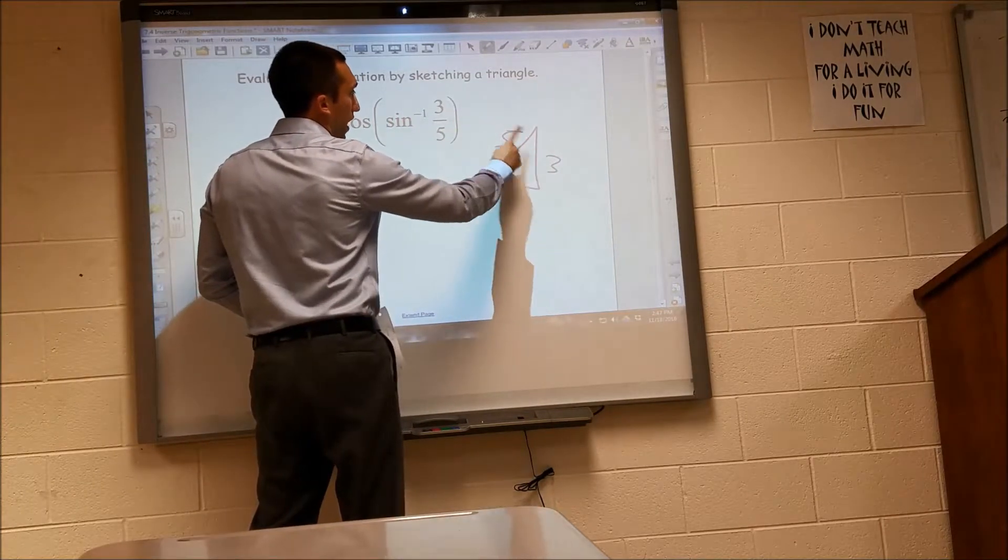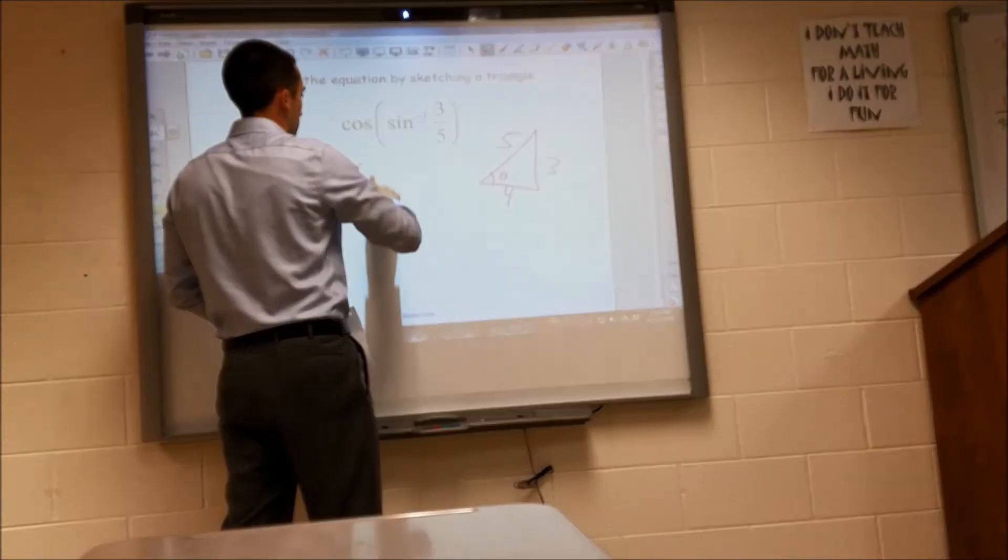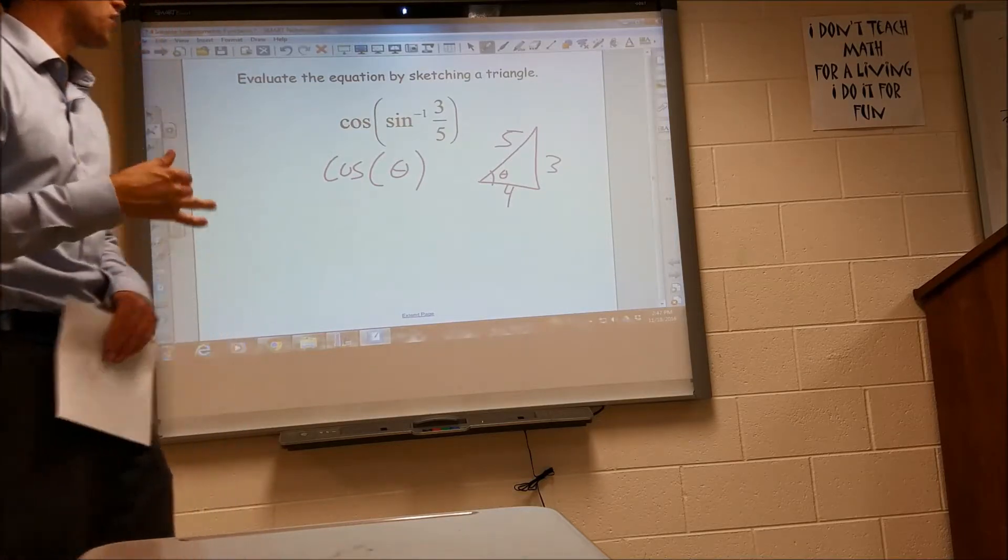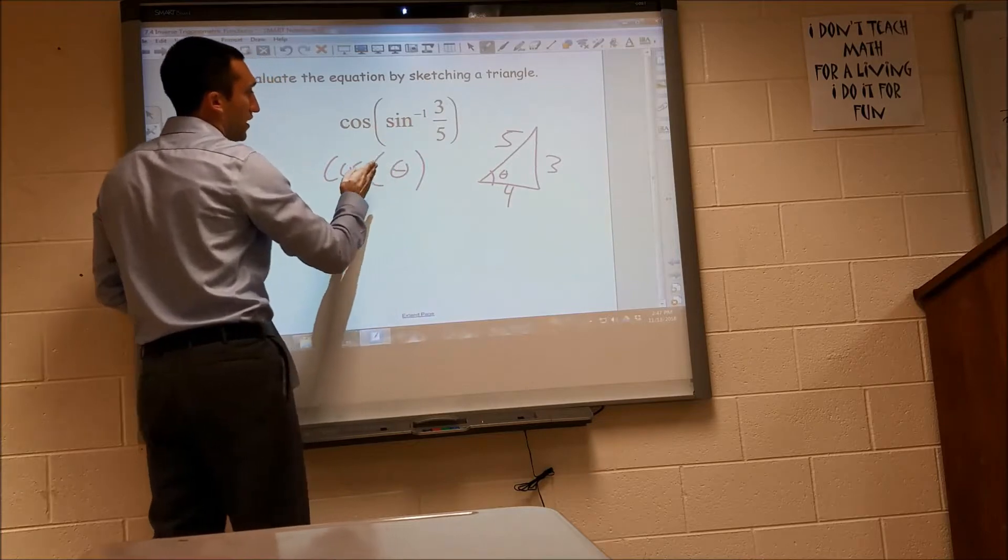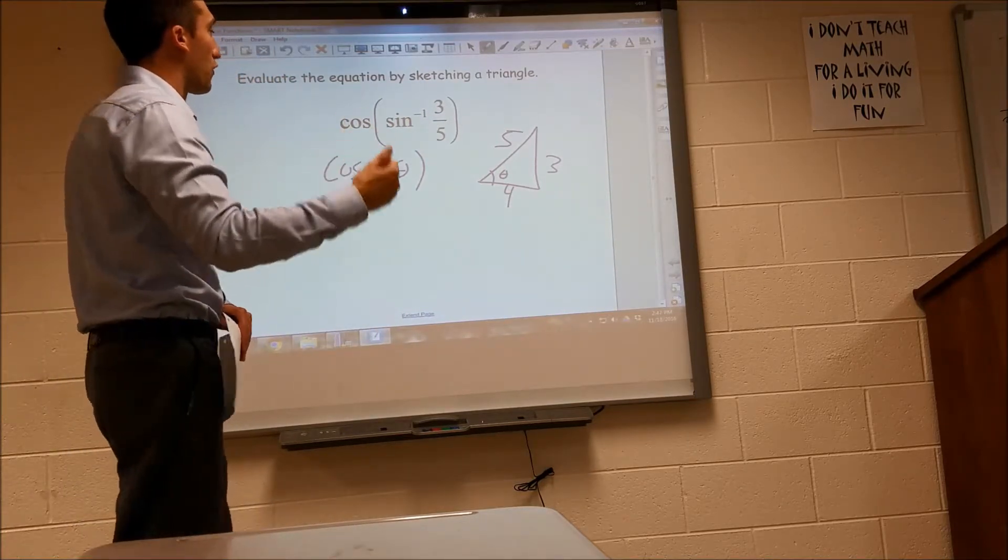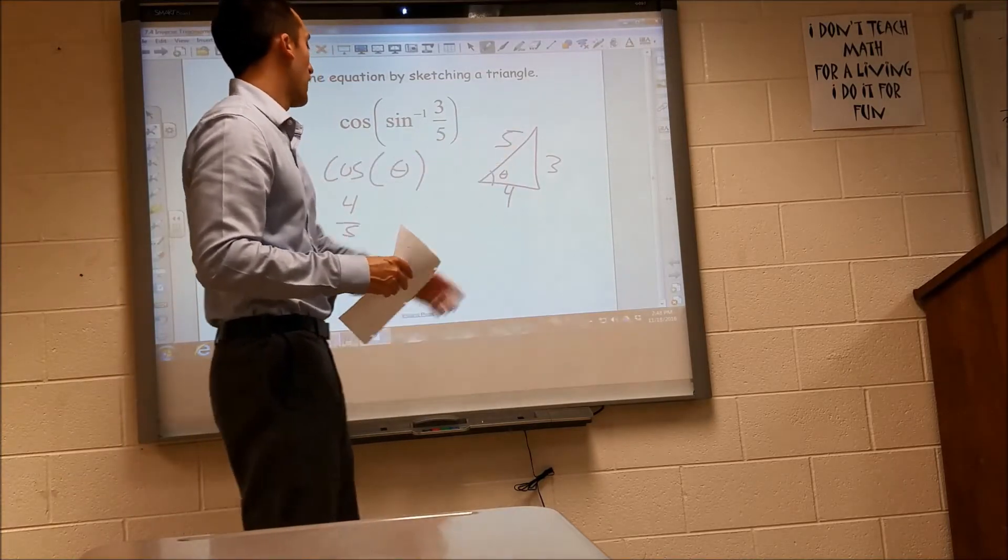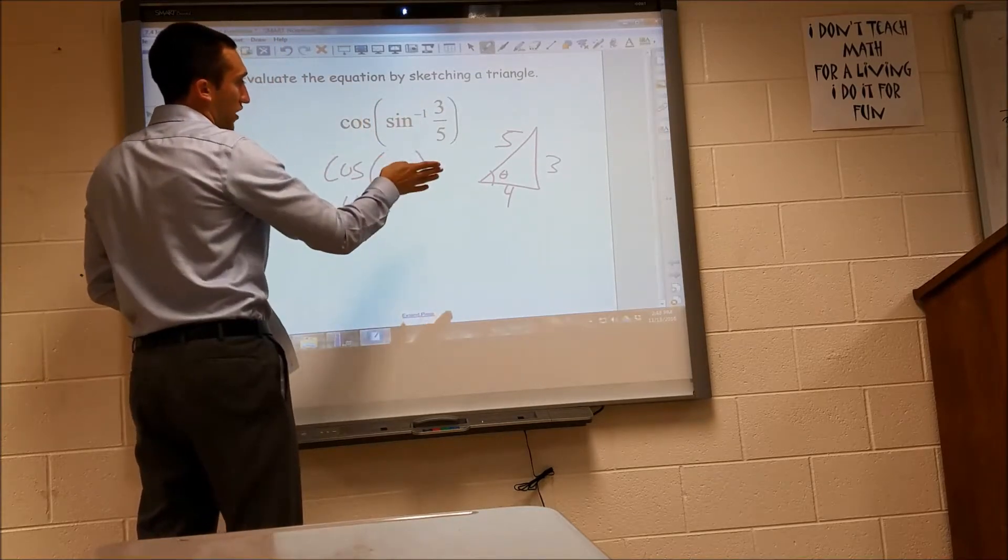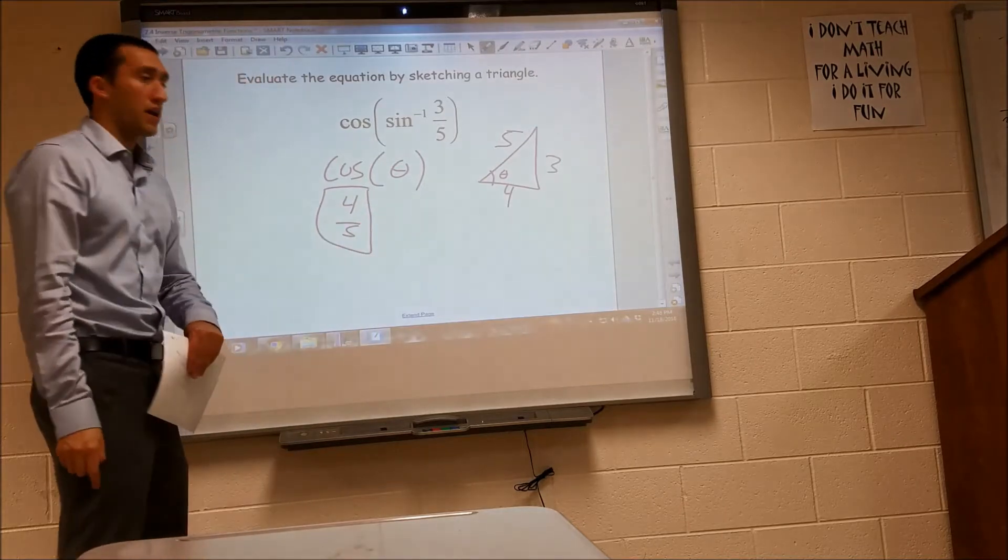Well, if I took the inverse sine of 3 fifths, that's just going to give me theta. We don't know what theta is, but it doesn't matter because we're not looking for theta. We're looking for the cosine. So the inverse sine of 3 fifths is theta, and then cosine of theta, cosine is adjacent over hypotenuse. So this just equals 4 fifths, because it's adjacent over hypotenuse. So we have solved this equation by sketching the triangle and then finding the cosine of theta.